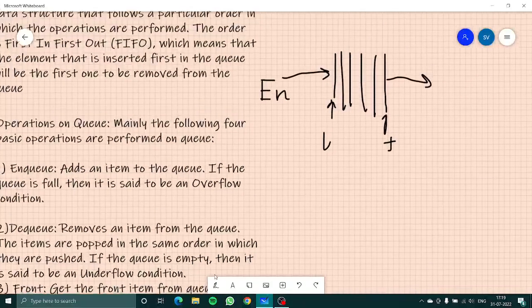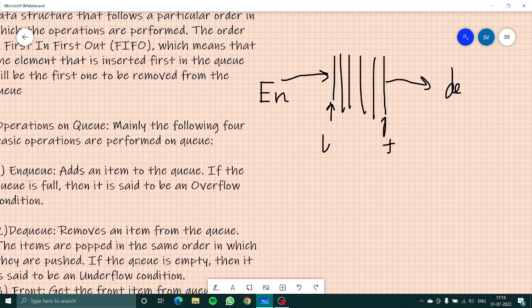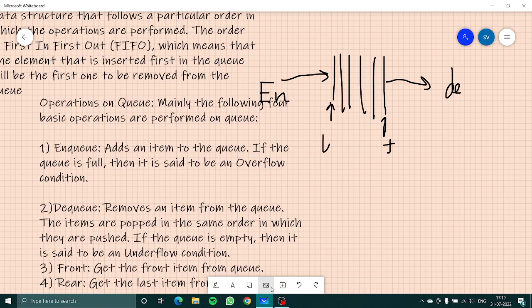So dequeue will happen in the first position. Now if I say front, front gets the front item from the queue, that is this element. And rear gets us the last element of the queue, which is this element.